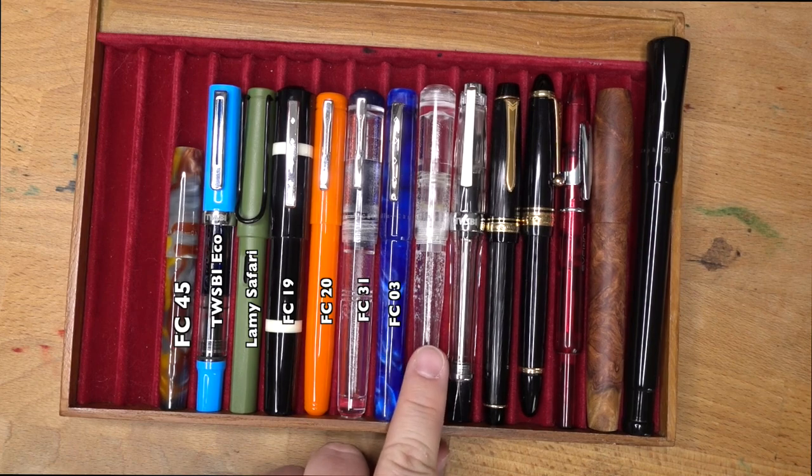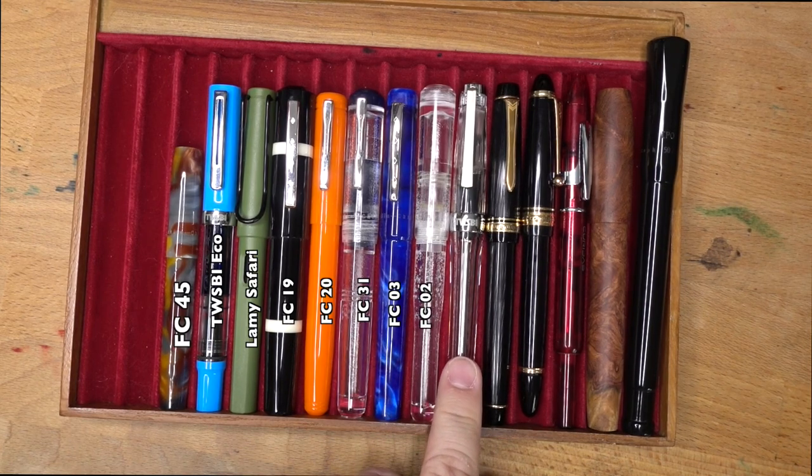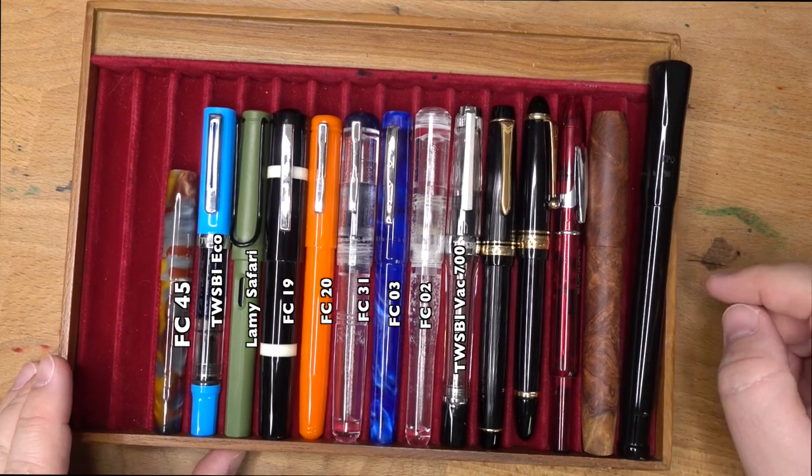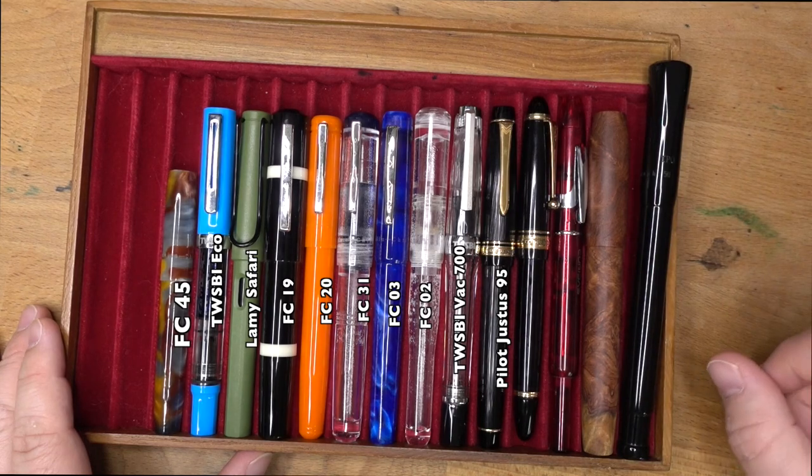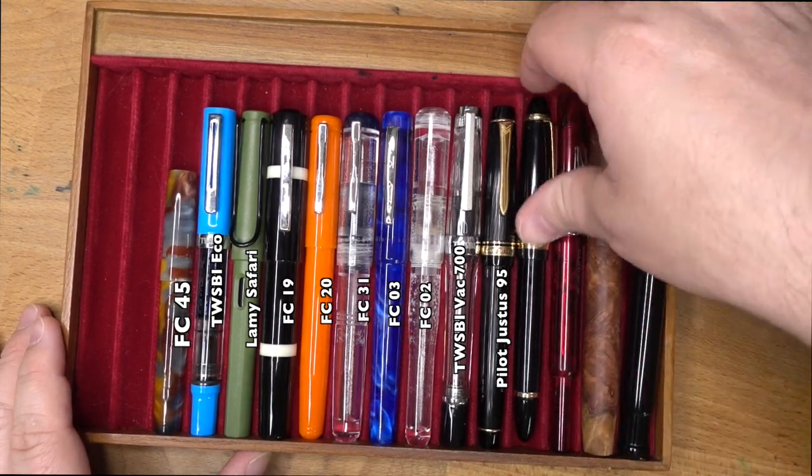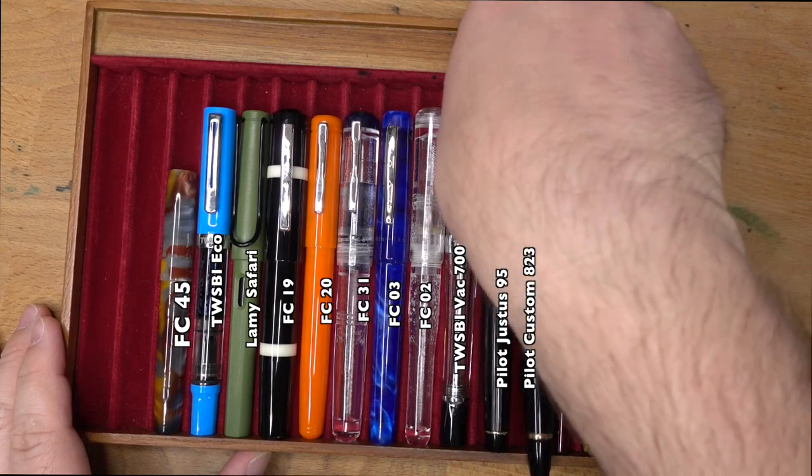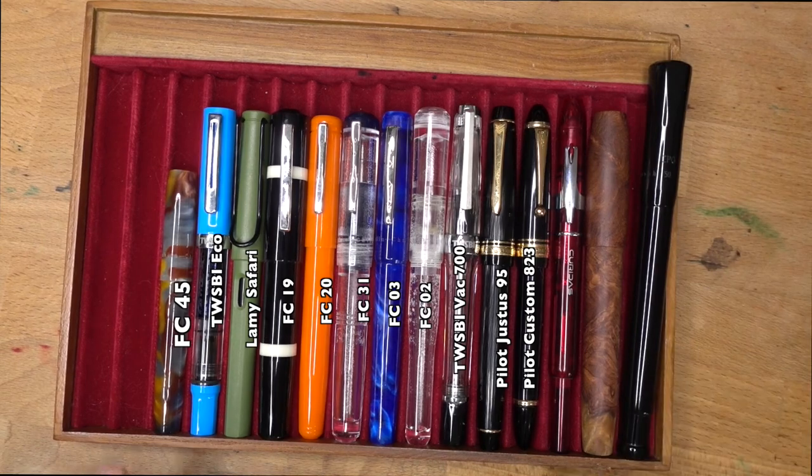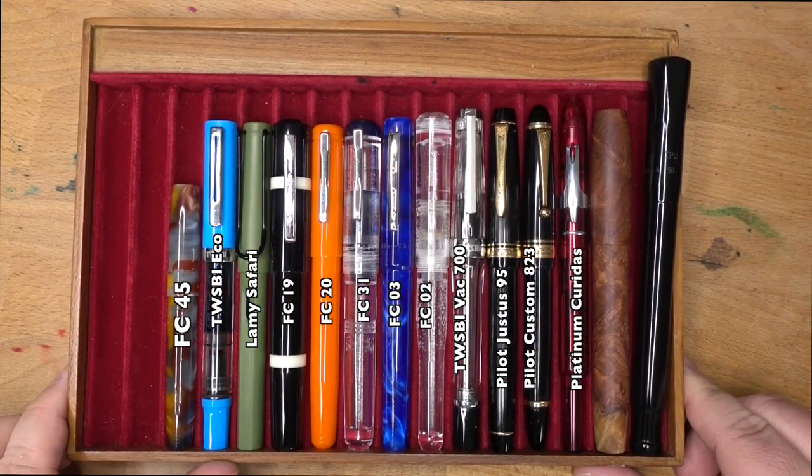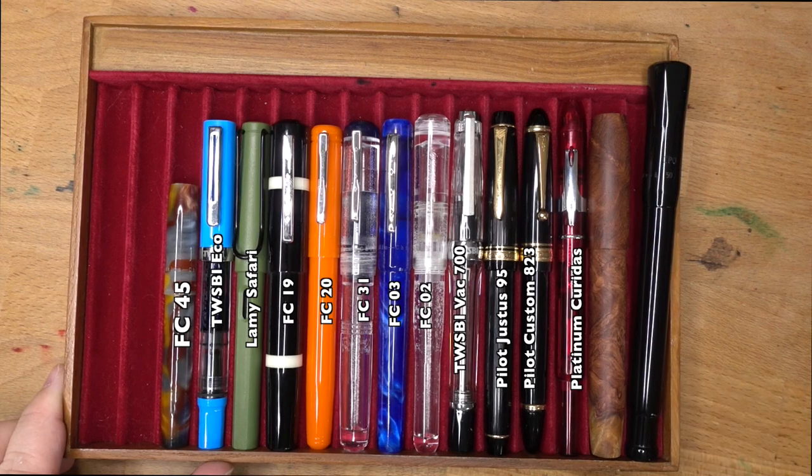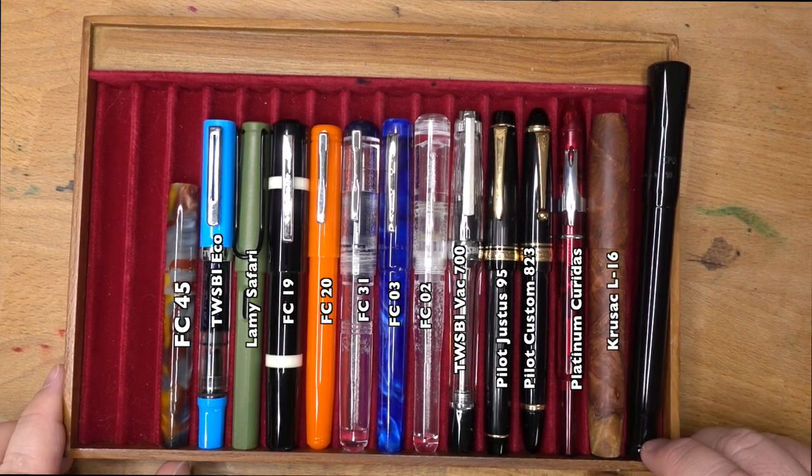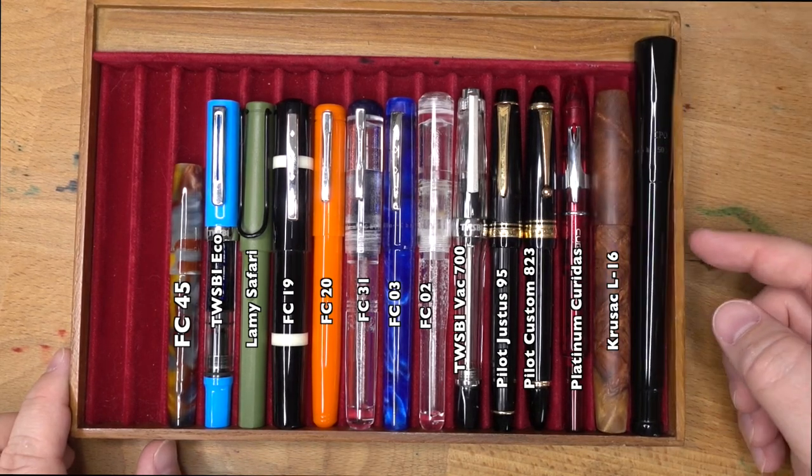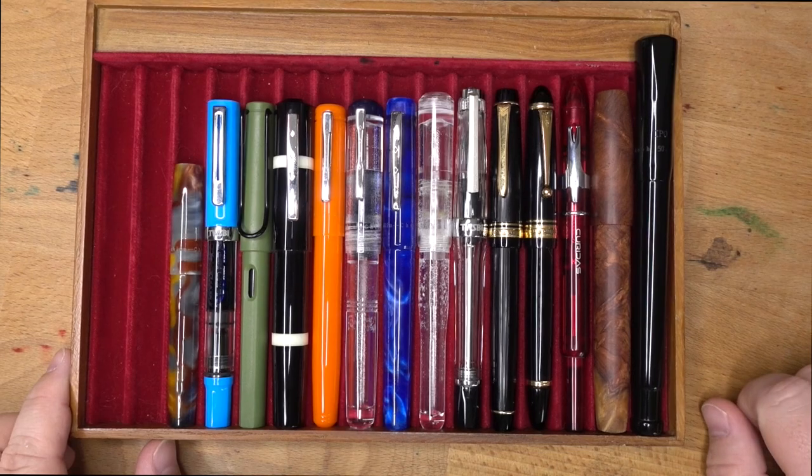The Model 2. And then we get into a TWSBI VAC 700, which is a pretty long pen, but it has nothing on the Grandis. Then we have the Pilot Justice 95, the Pilot Custom 823, which is a fairly long pen. Come on now. I want my clip to all face. There we go. Good. Thank you very much. The Curidas, which a lot of people will comment on how long that one is when it's unclicked. And then this big old pen is a Ryan Krusac Model 16, the L16, the Legend 16, which is a pretty big pen. But the Grandis is the boss of them all.